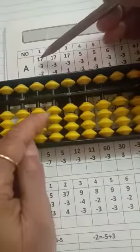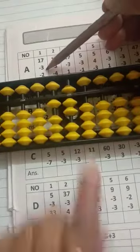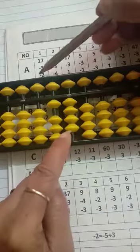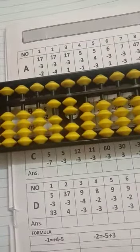So this is 17 minus 3. We don't have 3, so minus 3 ki formula: minus 5, add is 2. Then minus 2, answer is 12.